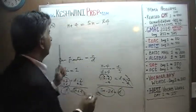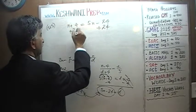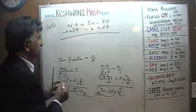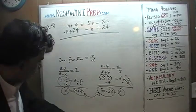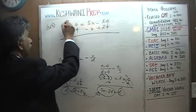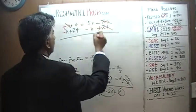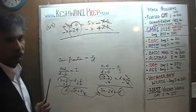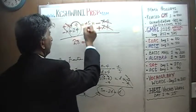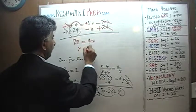Bring the 24 to the other side by adding 24 to both sides, and subtract n from both sides. The n terms give 5n minus n equals 4n, and 4 plus 24 equals 28 — so 4n equals 28, which means n equals 7. Our numerator is 7.